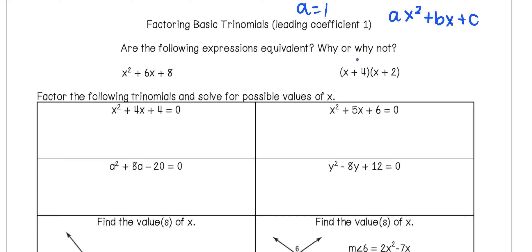The first question I want to pose is: are the following two expressions equivalent? Why or why not? We have x squared plus 6x plus 8, and on the other side we have (x+4)(x+2). Thinking about the right side, we see two binomials being multiplied, so we need to use the FOIL method or double distribution — taking each term in both binomials and multiplying it by the terms in the other binomial.